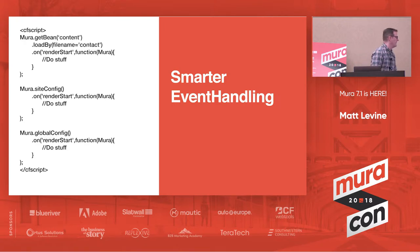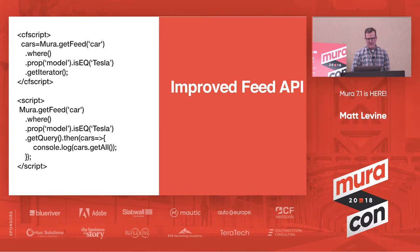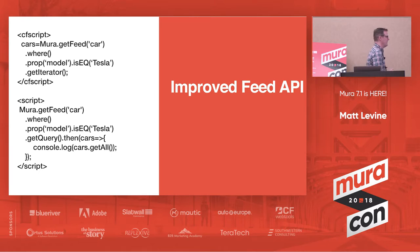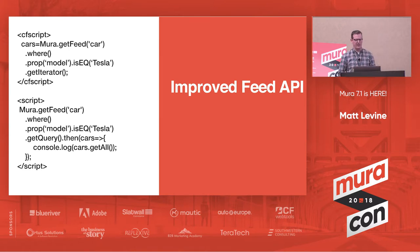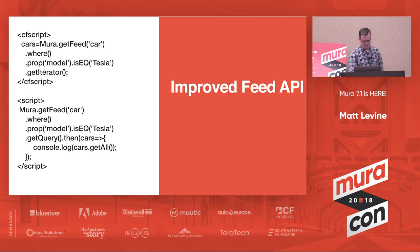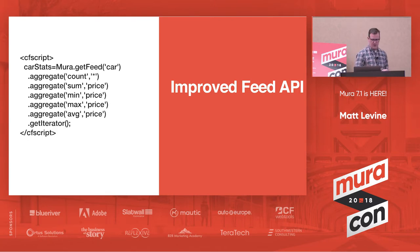We have an improved Feed API. Some of this came out in 7, but we're still very excited about having a more human-readable querying API that lets people almost guess the syntax for getting server-side iterators or even client-side content via Mira.js — our default server-side JavaScript framework. The first example is a CS script and the bottom one is JavaScript. New in 7.1, we also have aggregate queries available in both the server-side Mira Feed API and Mira.js.